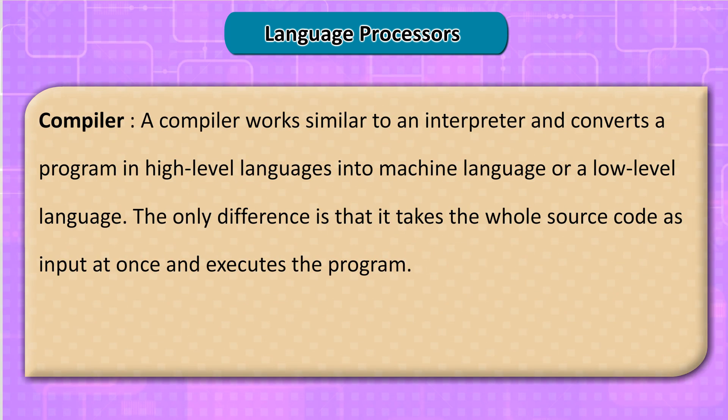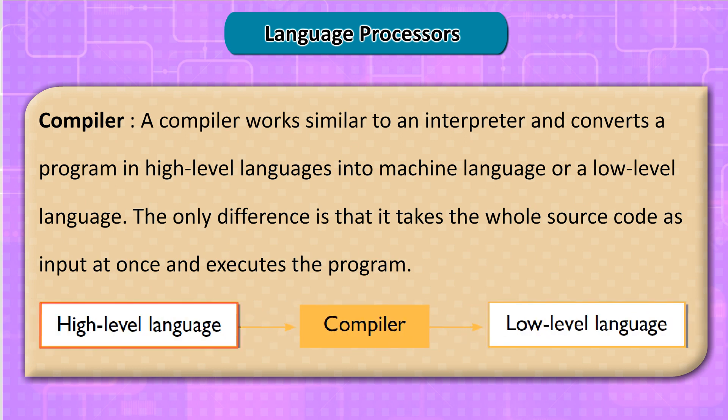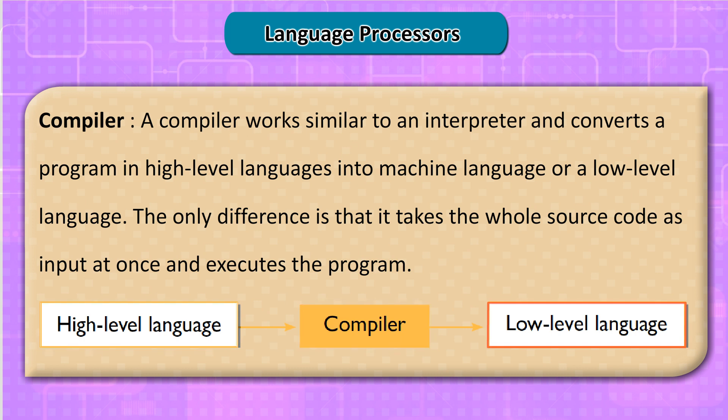Compiler: A compiler works similarly to an interpreter and converts a program in high-level language into machine language or a low-level language. The key difference is that it takes the whole source code as input at once and executes the program. The flow is: High-level language → Compiler → Low-level language.